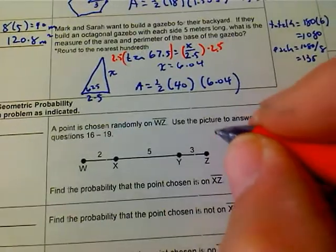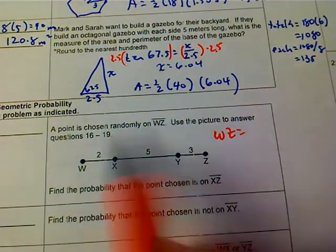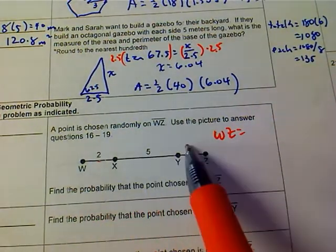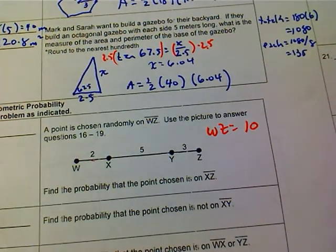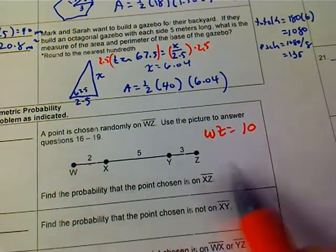Well, first thing to do is figure out that WZ is 2 plus 5 is 7, 8, 9, 10. That's 10 long, 10 units long.